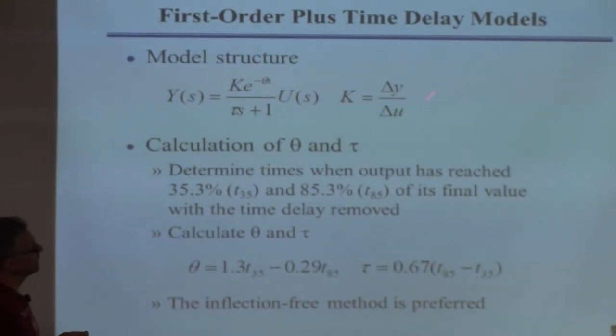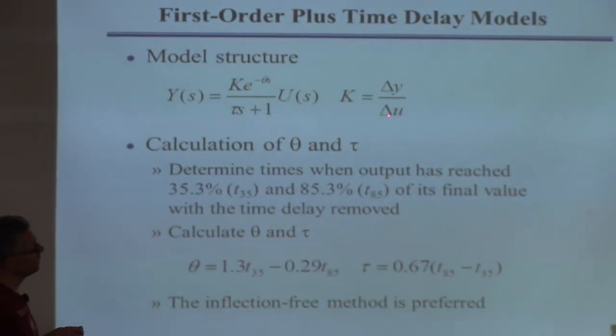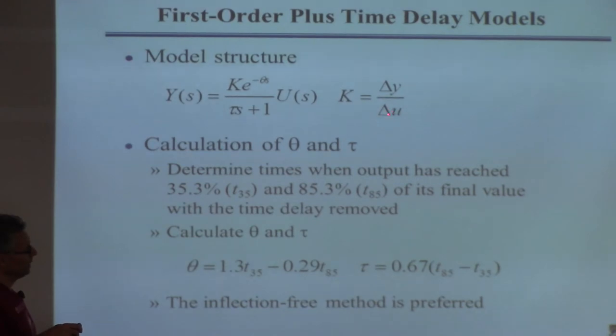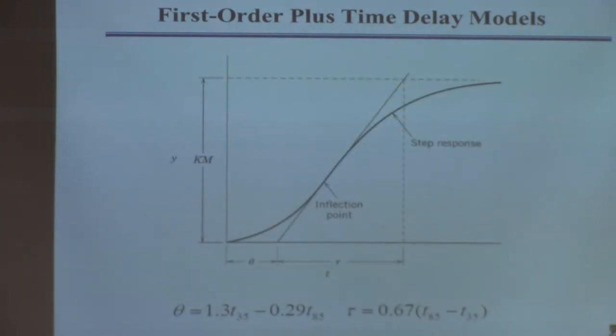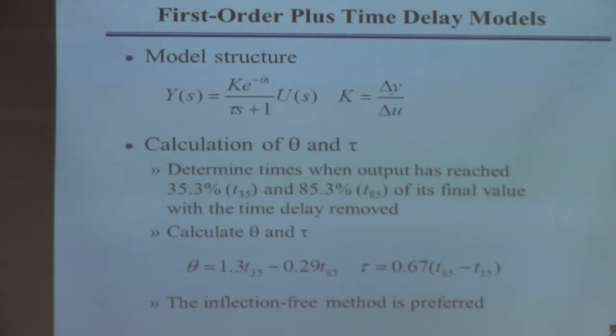How do I calculate the gain? Same way as always. I change the input from a value at time equals 0 up to some new value - that's delta U. Find out how much the output changed from one steady state to another - that's delta Y. Divide the two, get the gain K = Δy/Δu.